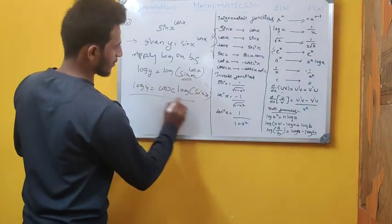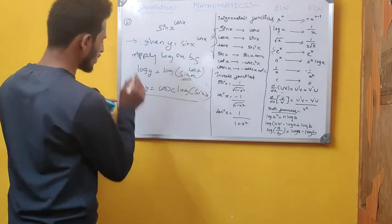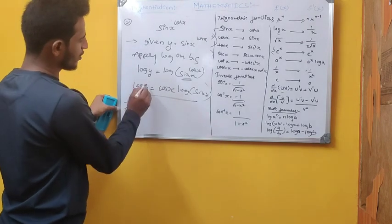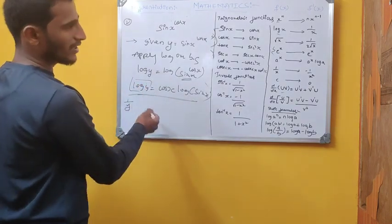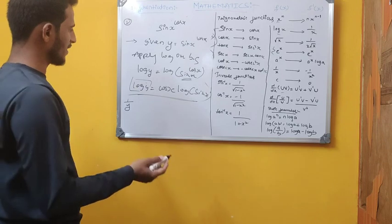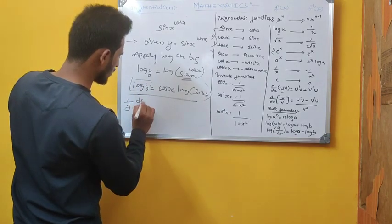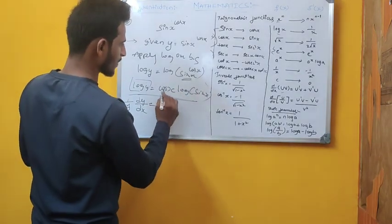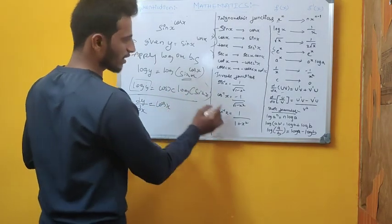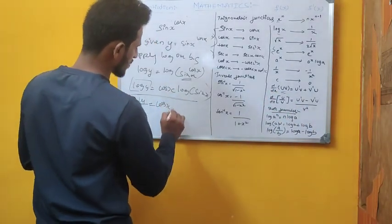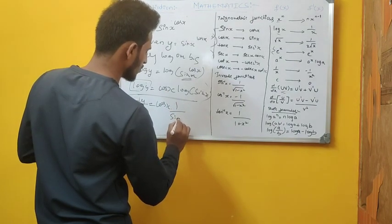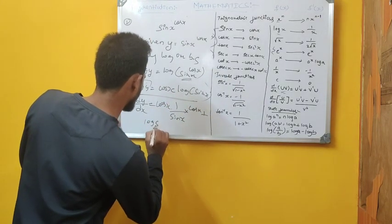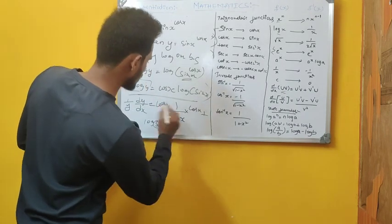Now differentiate both sides. The left side: differentiation of log y gives (1/y)·dy/dx. The right side uses the product rule on cos(x)·log(sin x): first function cos(x) as-is times differentiation of log(sin x), which is (1/sin x)·cos x, plus log(sin x) times differentiation of cos(x), which is -sin x.